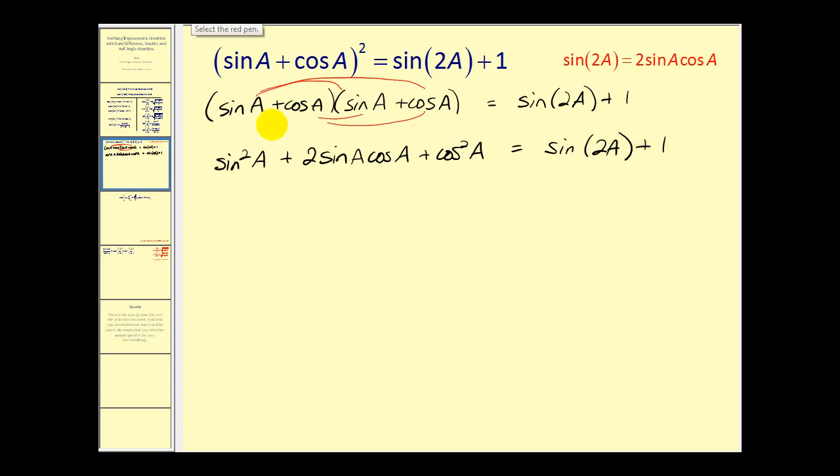The next thing we should notice is sine squared a plus cosine squared a is equal to one. So we'll have two sine a cosine a plus one equals sine two a plus one.